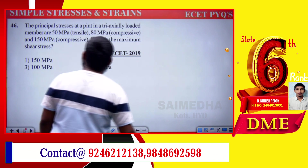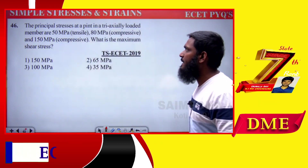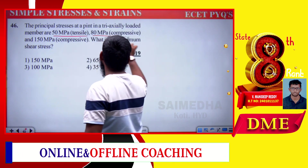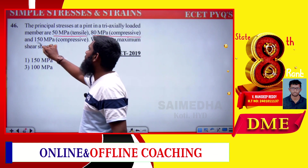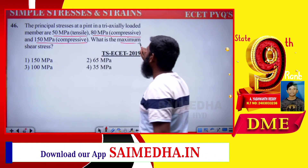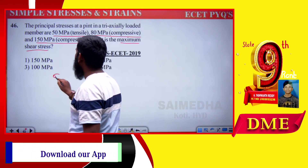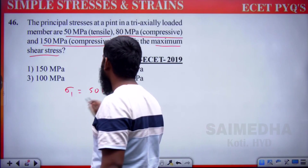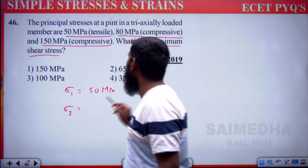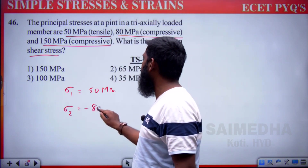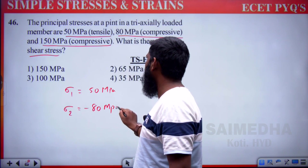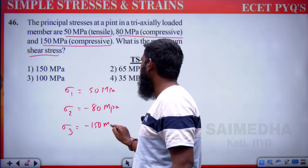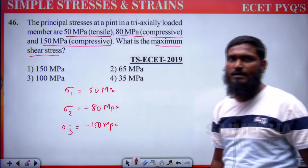Principal stresses at a point in a tri-axially loaded member: σ1 = +50 MPa (tensile), σ2 = −80 MPa (compressive), σ3 = −150 MPa (compressive). Find the maximum shear stress.